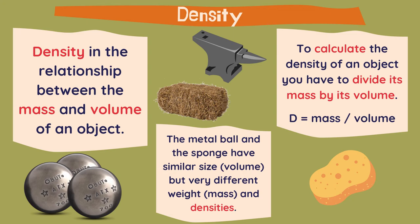To calculate the density of an object, you have to divide its mass by its volume. Density equals mass divided by volume.